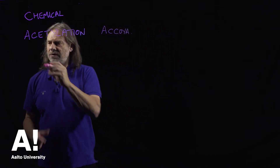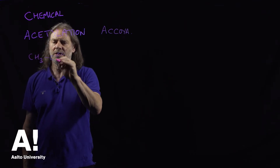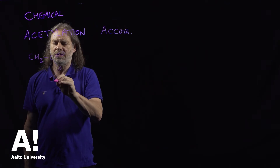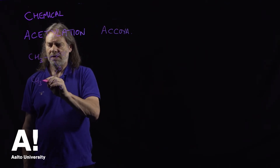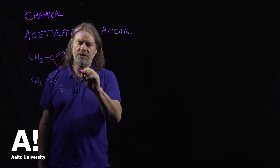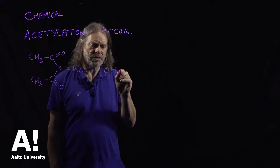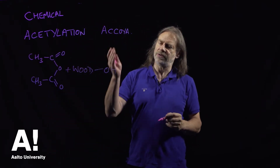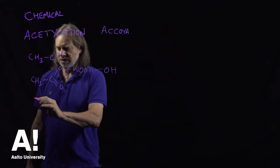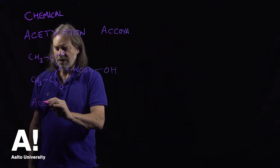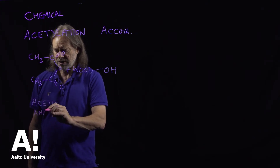Acetylation involves the reaction between acetic anhydride, which has this structure, and wood. Wood is far too complicated to write down the chemical structure, so we just call it wood — and it's a reaction between the hydroxyl groups of the wood and acetic anhydride. Some people think it's a reaction with acetic acid, but it isn't; it's the anhydride.